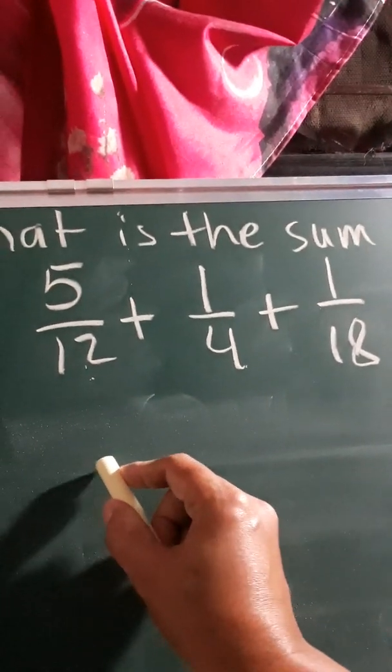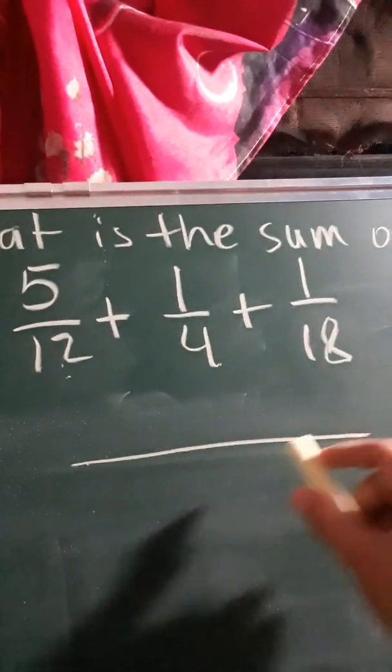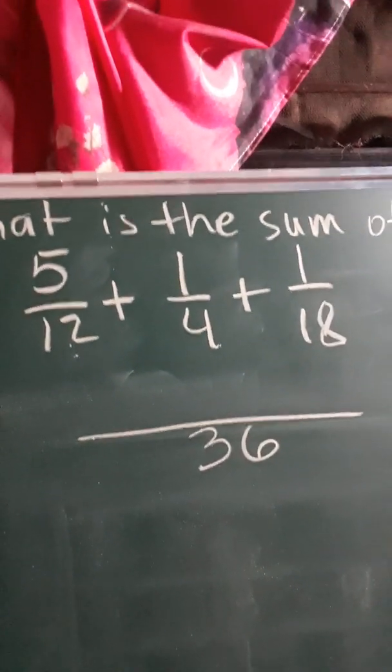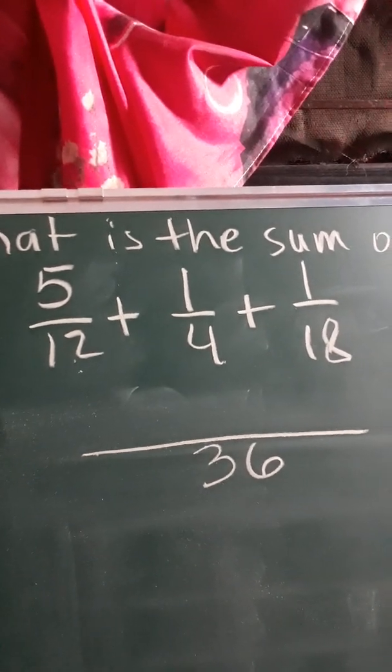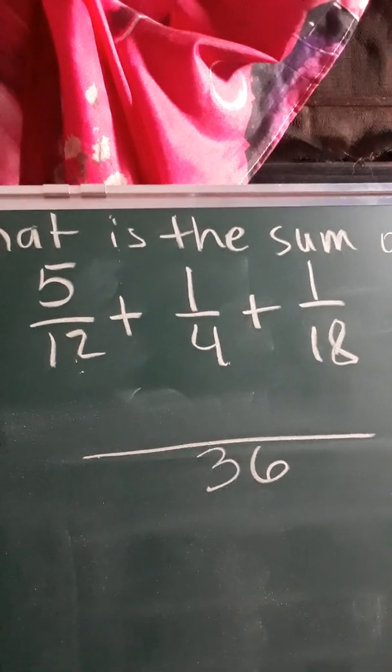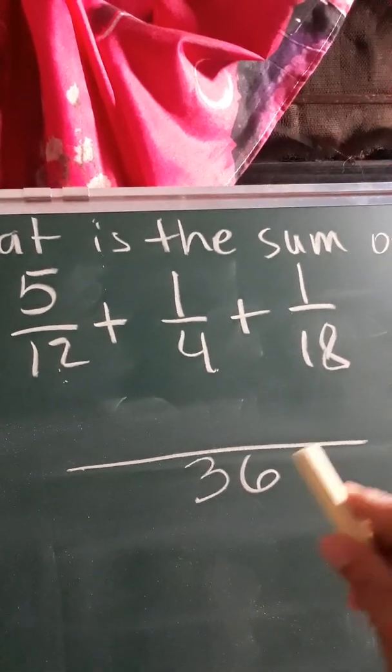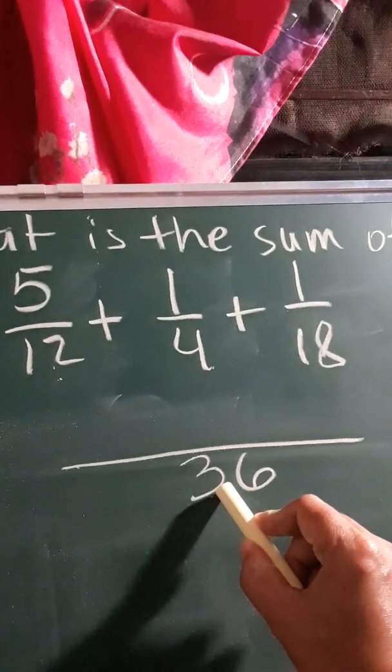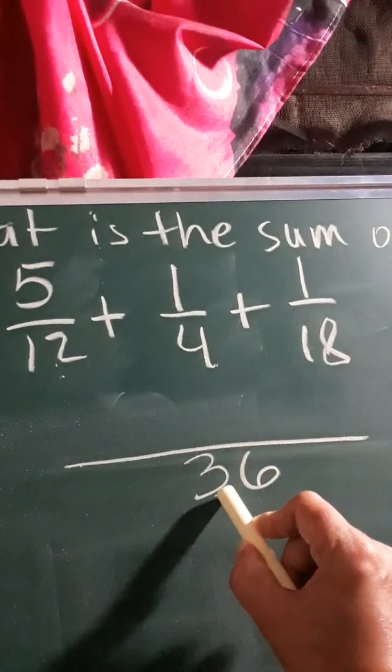In here, with 12, 4, and 18, we have the LCD of 36. So how to get the sum of these three dissimilar fractions? First, we're going to find the LCD, which is 36. Then after that, we're going to divide the LCD by the denominator of those three fractions.